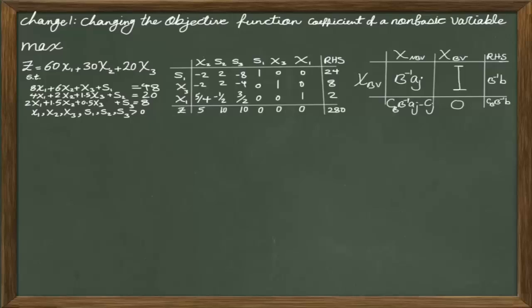In this lesson we are going to investigate the change in the coefficient of X2, S2, or S3, which are the non-basic decision variables. Out of the six decision variables X1, X2, X3, S1, S2, S3, only S1, X3, and X1 are in the basis — we call them basic variables. The rest are non-basic variables and their values are equal to zero. Suppose X1, X2, X3 are three products produced in a manufacturing plant, and the objective function is maximization of profit from these products.